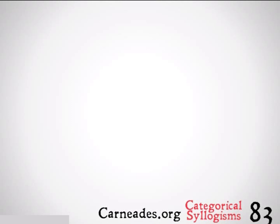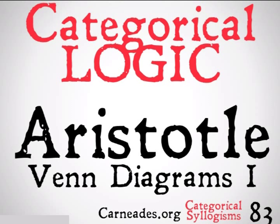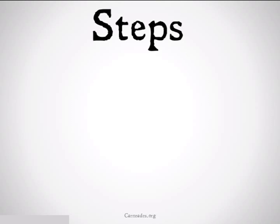Welcome back to 100 Days of Logic with Carnades.org. Today we're going to be continuing with categorical logic and categorical syllogisms, looking at categorical syllogisms for Aristotle, creating Venn diagrams for Aristotle, and determining if categorical syllogisms are valid for Aristotle as opposed to for Boole. This is going to be a little bit longer than our normal video — a three-minute philosophy video instead of 90 seconds. Let's take a look.